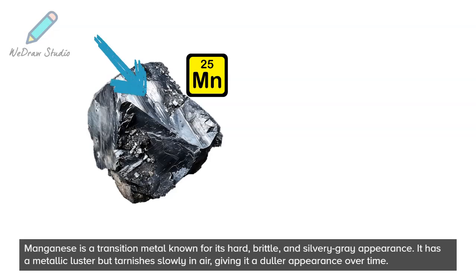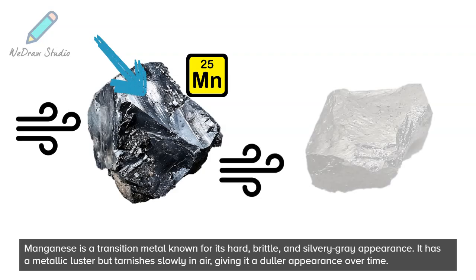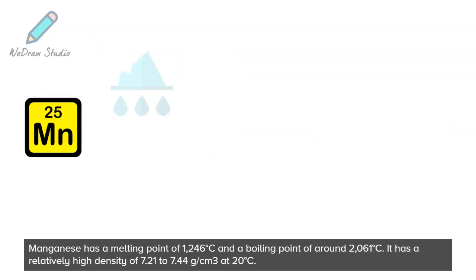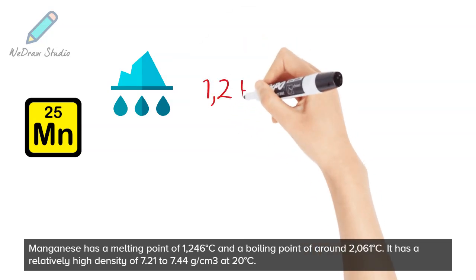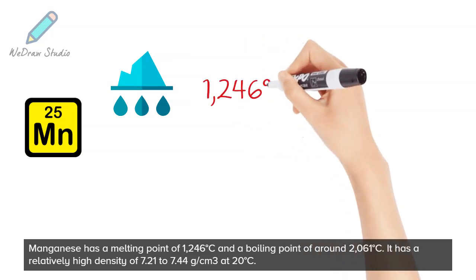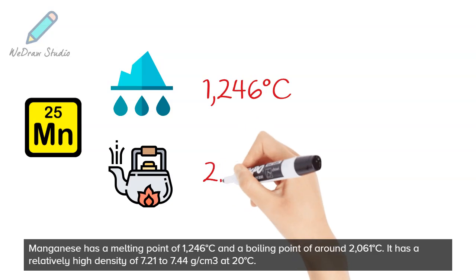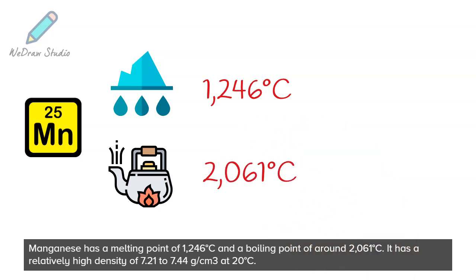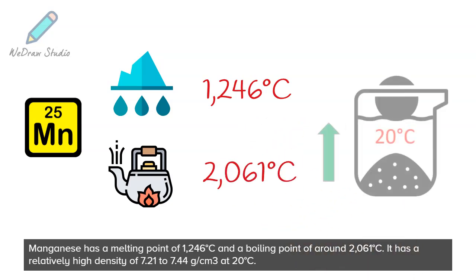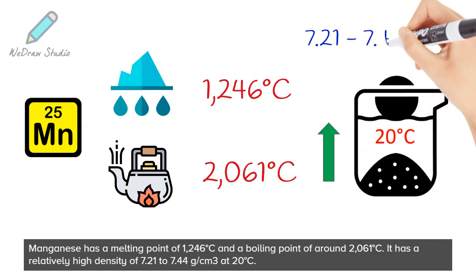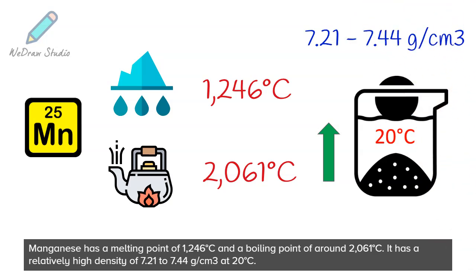It has a metallic luster, but tarnishes slowly in air, giving it a duller appearance over time. Manganese has a melting point of 1,246 degrees Celsius and a boiling point of around 2,061 degrees Celsius. It has a relatively high density of 7.21 to 7.44 grams per cubic centimeter at 20 degrees Celsius.